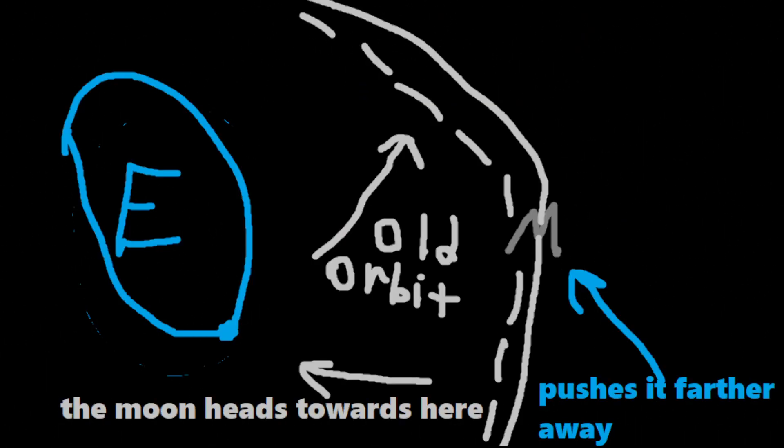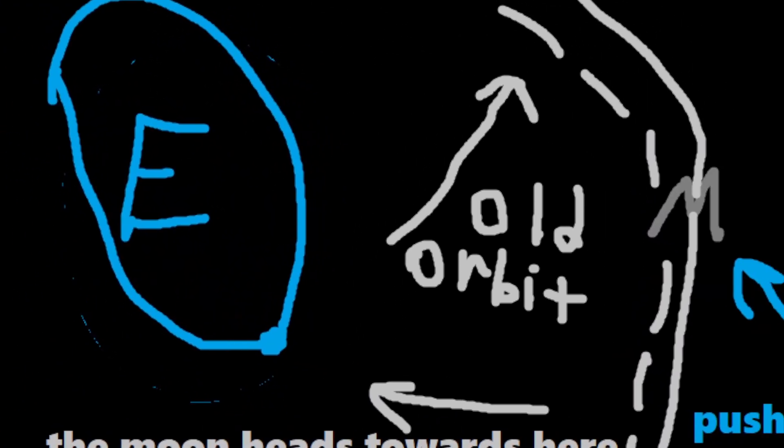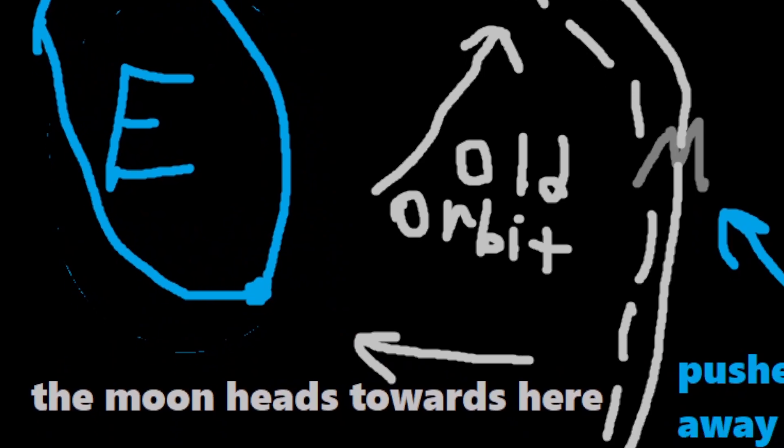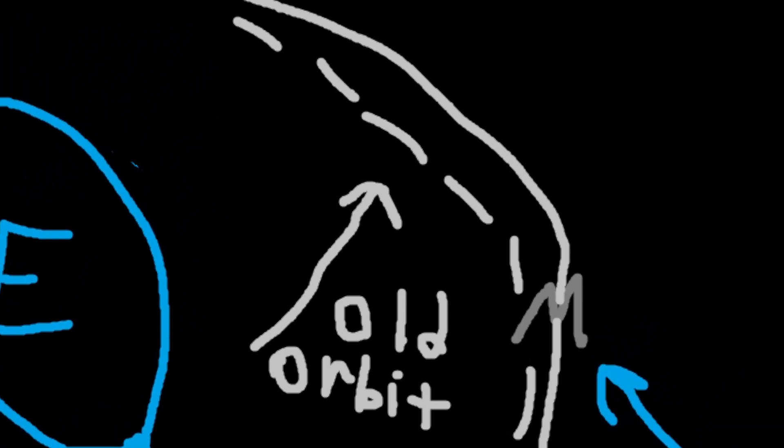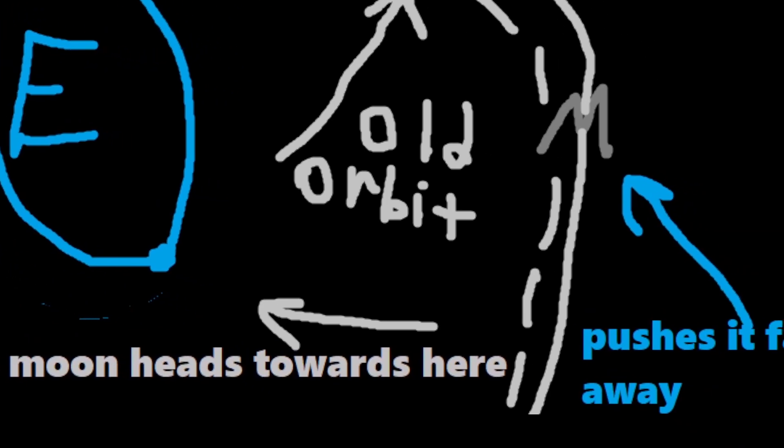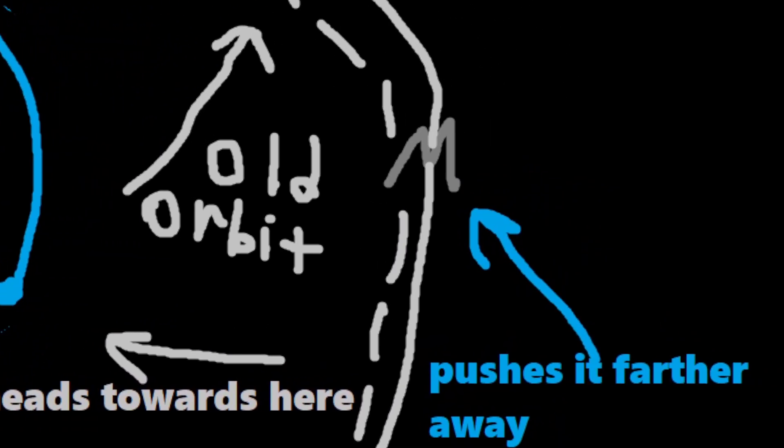Alright, so think of it this way. You're bulging right here, right? Yeah. And the moon is heading towards here. Yeah. And I also added an old orb. So, he's trying to go towards it, right? Yeah. And then, it pushes him farther away.